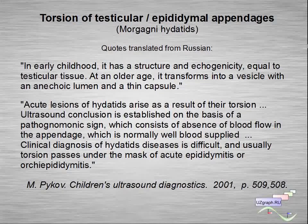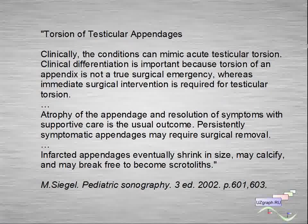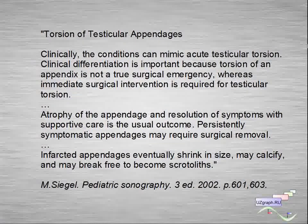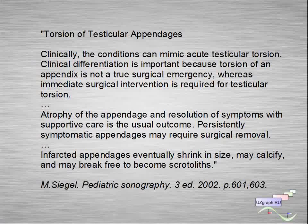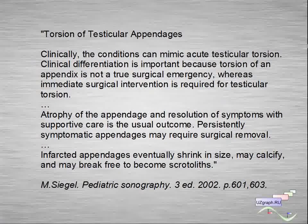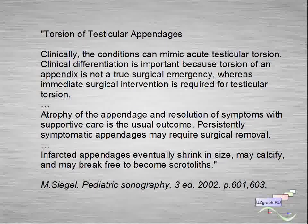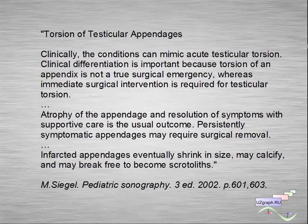From Segal's Pediatric Sonography textbook on torsion of testicular appendages: clinically the condition can mimic acute testicular torsion. Clinical differentiation is important because torsion of the appendix is not a true surgical emergency, whereas immediate surgical intervention is required for testicular torsion. Atrophied appendages and resolution of symptoms with supportive care is the usual outcome. Persistently symptomatic appendages may require surgical removal. Eventually appendages shrink in size, may calcify, and may break free to become scrotal calculi.